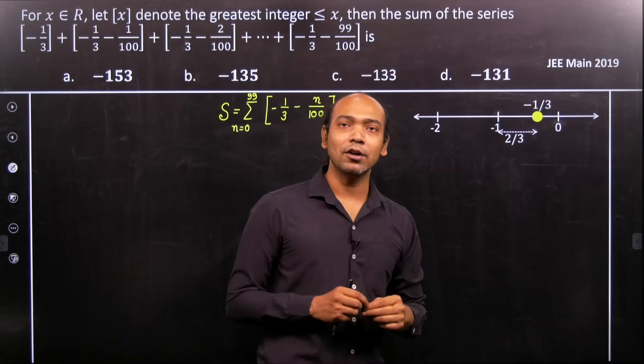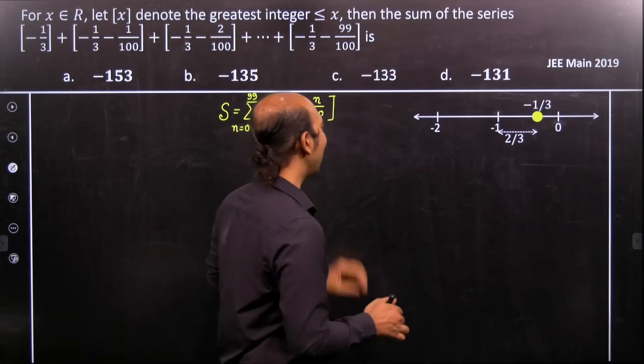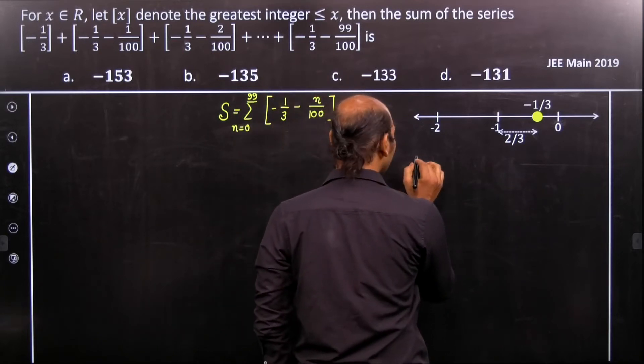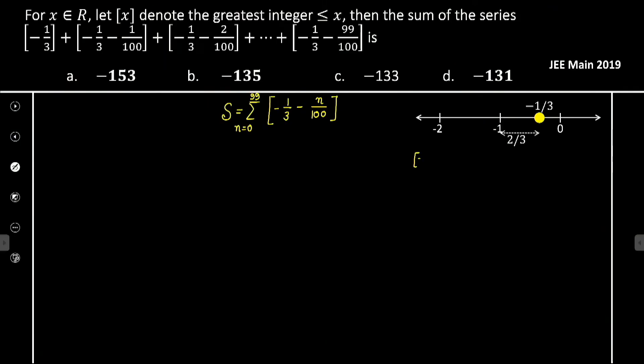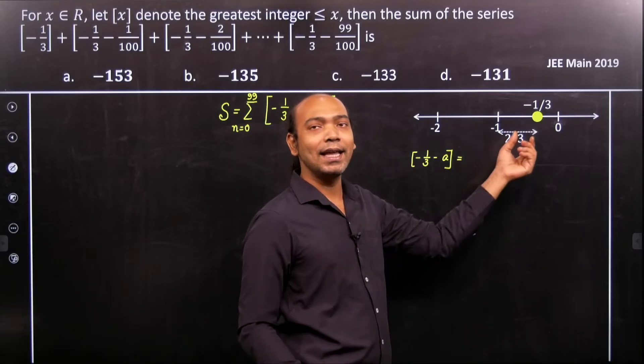We can easily observe that these terms can be written in this form: Let's say it is minus 1 by 3 minus a. If I subtract a and if a equals 0 to 2 by 3...